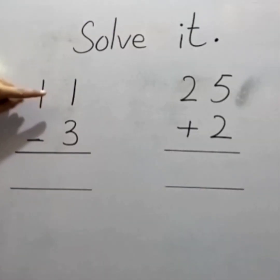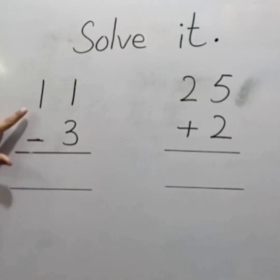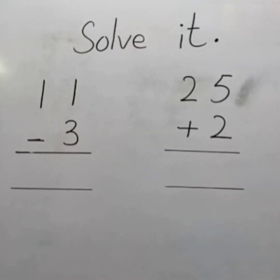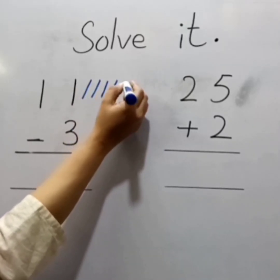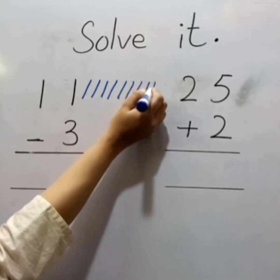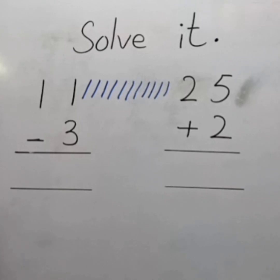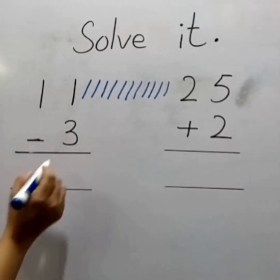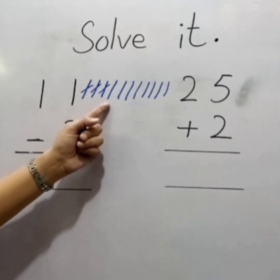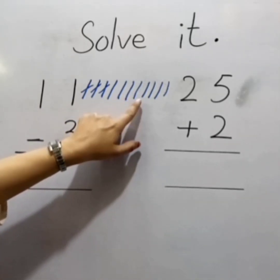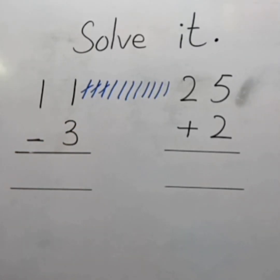Now, double digit subtraction. Here is the sign of subtraction: 11 minus 3. Draw 11 lines: 1, 2, 3, 4, 5, 6, 7, 8, 9, 10, 11. Now minus 3 means remove — cut 3 lines: 1, 2, 3. Count how many remaining: 1, 2, 3, 4, 5, 6, 7, 8. The answer is 8.